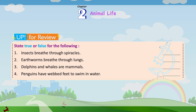State true or false for the following: Insects breathe through spiracles. Earthworms breathe through lungs. Dolphins and whales are mammals. Penguins have webbed feet to swim in water.